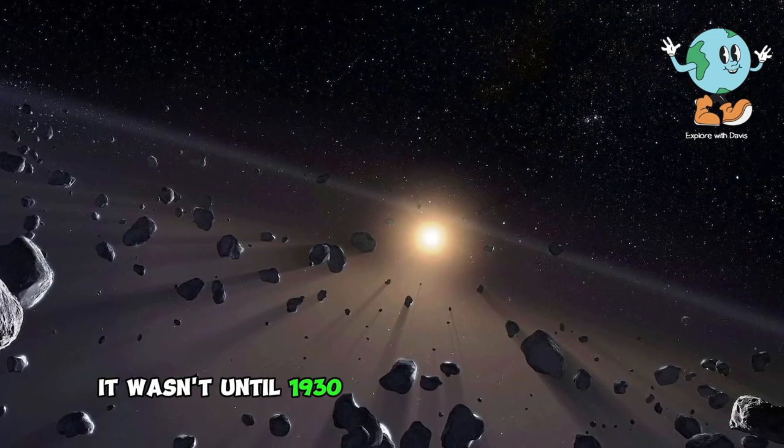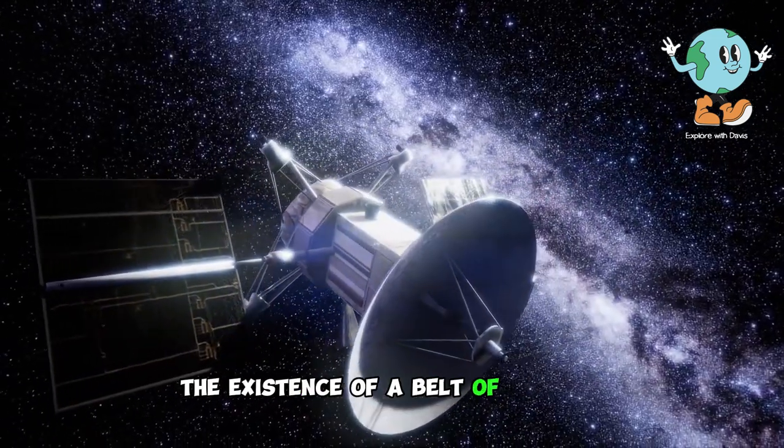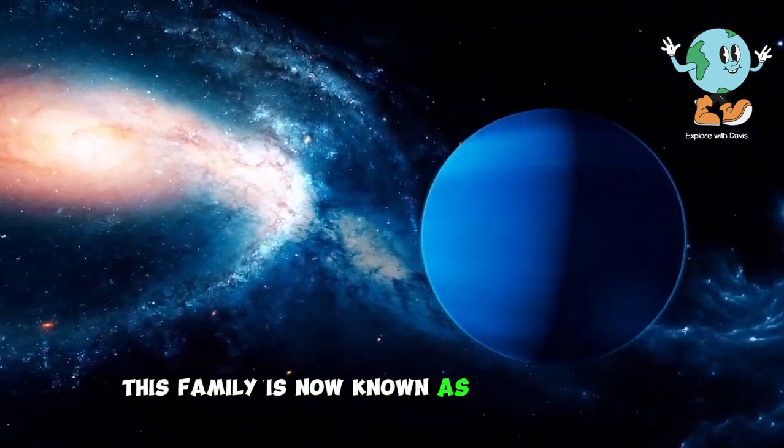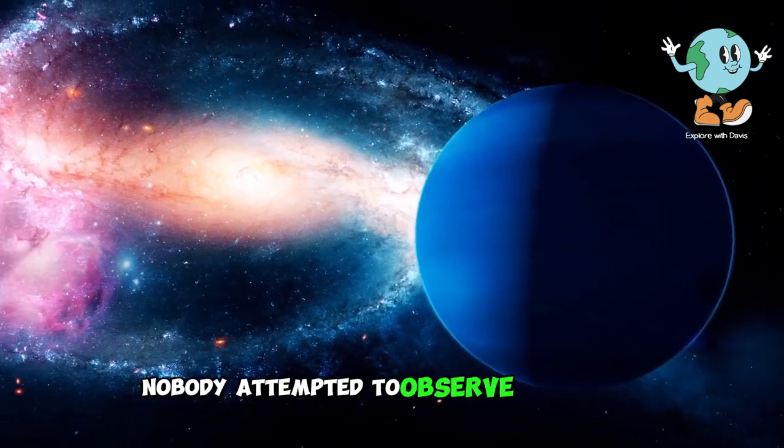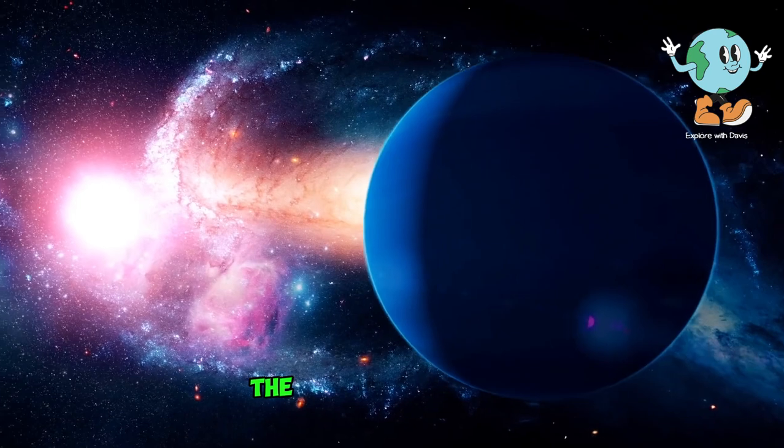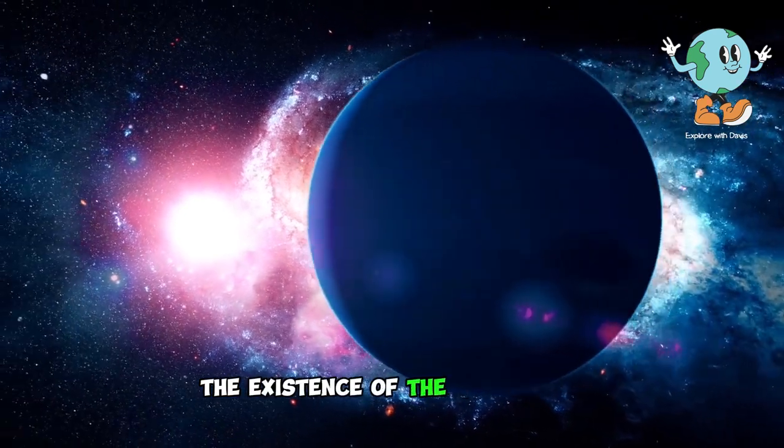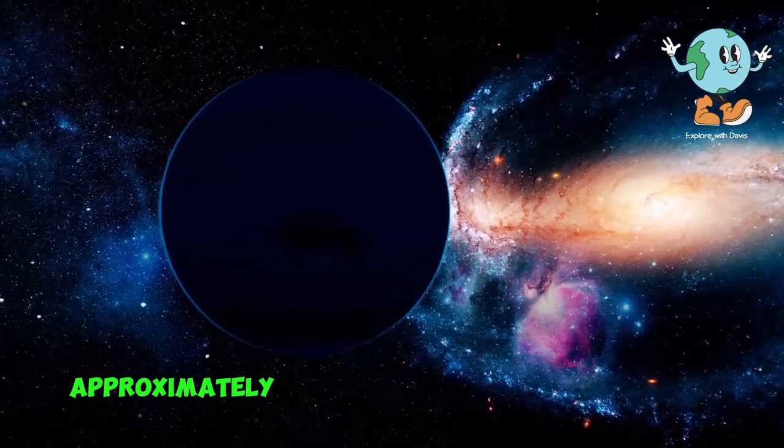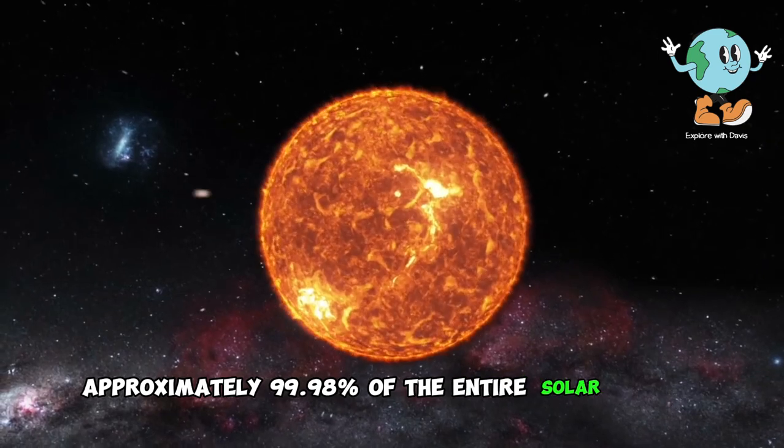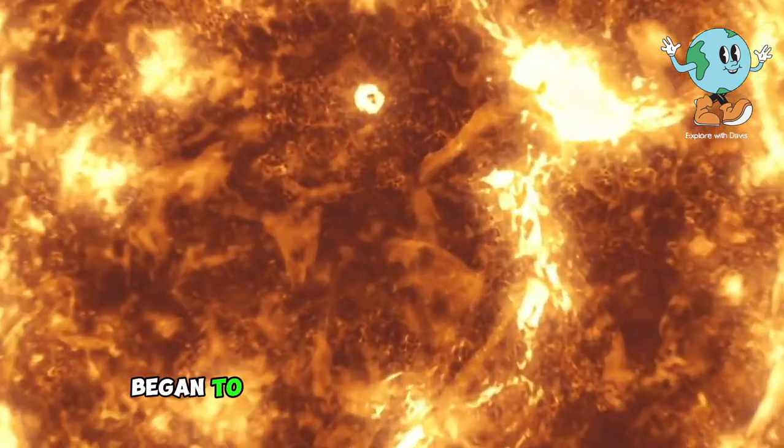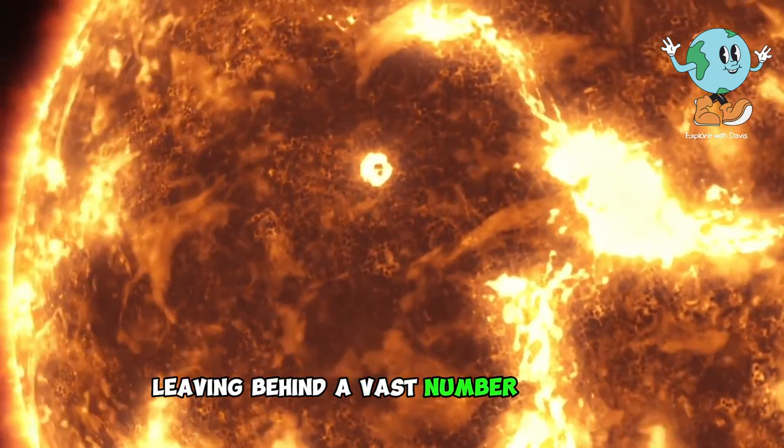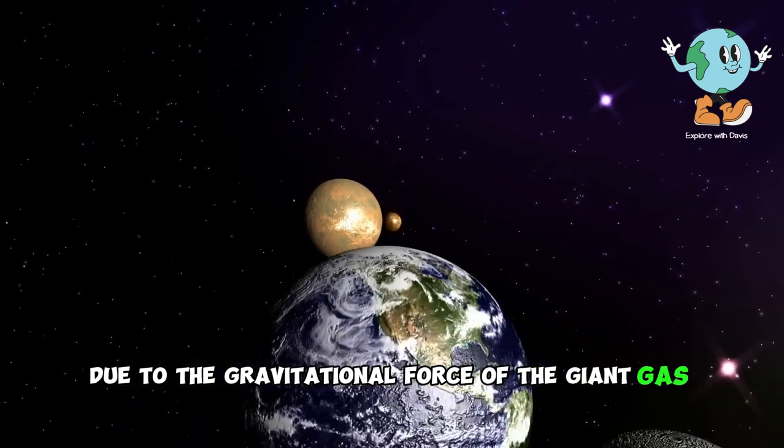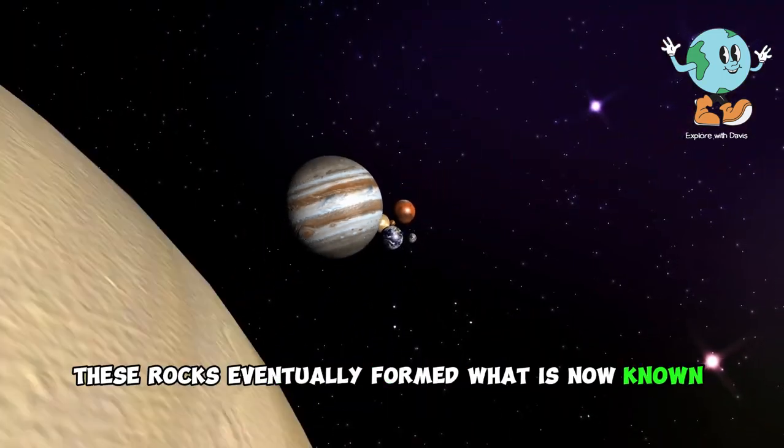It wasn't until 1930 that scientists hypothesized the existence of a belt of objects beyond the planet Neptune, and they considered Pluto as a member of this vast family. This family is now known as the Kuiper Belt. However, back then, nobody attempted to observe it directly, they simply speculated its presence. The prevailing belief in the existence of the Kuiper Belt arises from the formation of the solar system. The sun managed to capture the majority of the mass, approximately 99.98% of the entire solar system. The rest of the matter, the lighter material, began to clump together to form planets, leaving behind a vast number of rocks that had been expelled from the solar system's edge due to the gravitational force of the giant gas planets. These rocks eventually formed what is now known as the Kuiper Belt.